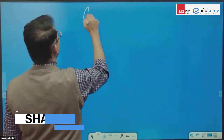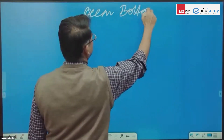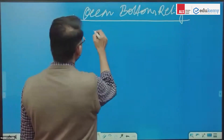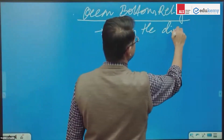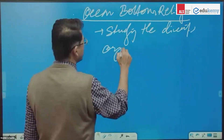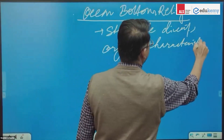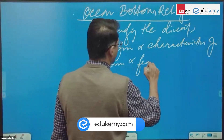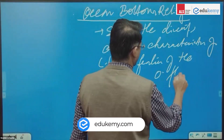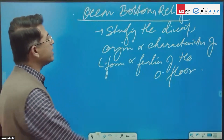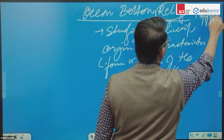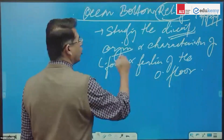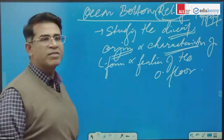The first topic of oceanography is ocean bottom relief. Ocean bottom relief is about studying the diversity, the origin, and the characteristics of landforms and features of the ocean floor. The word 'relief' basically implies the topography — what are the landforms and features on the ocean floor.